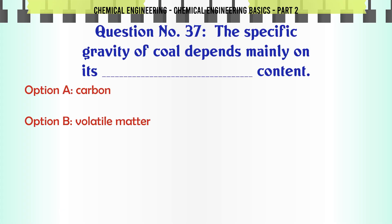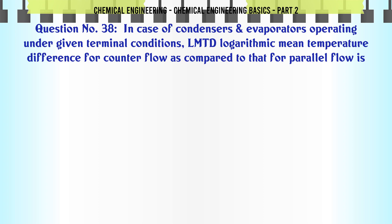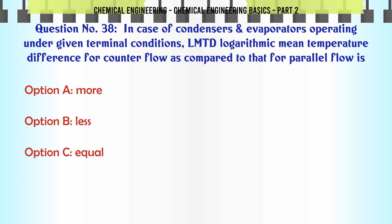The specific gravity of coal depends mainly on its content of: a) carbon, b) volatile matter, c) ash, d) moisture. The correct answer is: moisture.